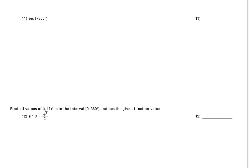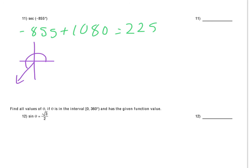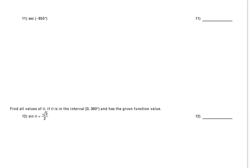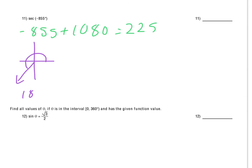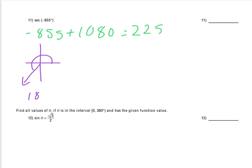For the next question, we're finding the exact value for secant of negative 855 degrees. We need a coterminal angle, so we add 1080 (three full revolutions) to get 225 degrees. The reference angle for 225 — which is in the third quadrant — is found by doing 225 minus 180, giving a reference angle of 45 degrees.